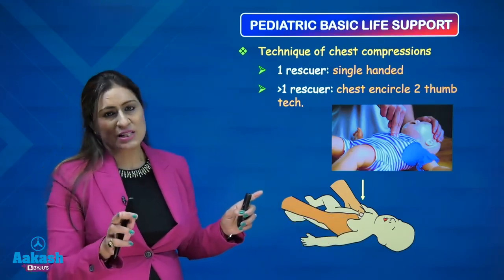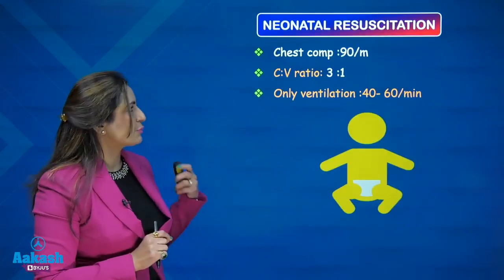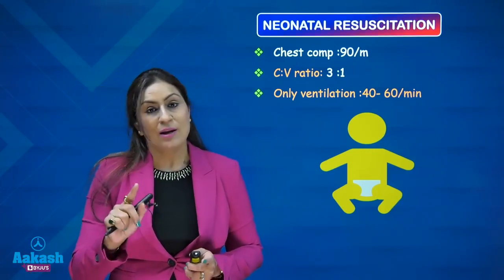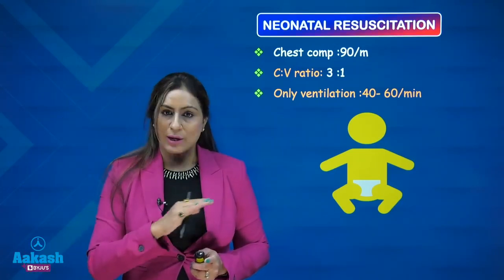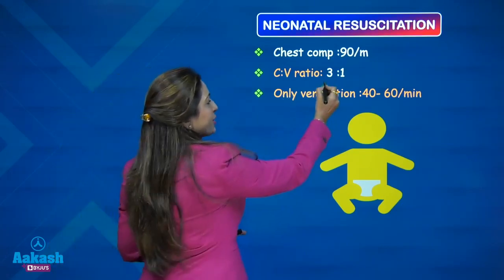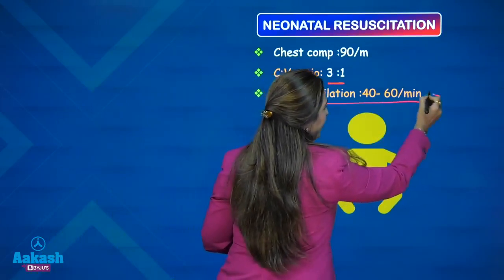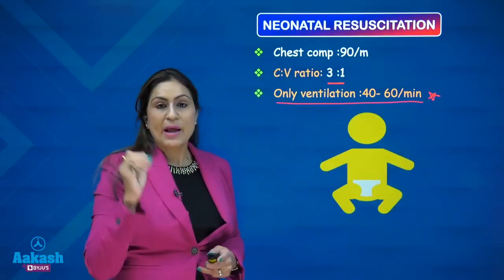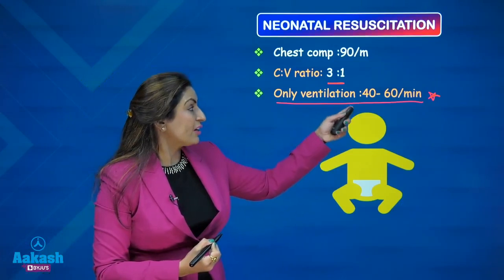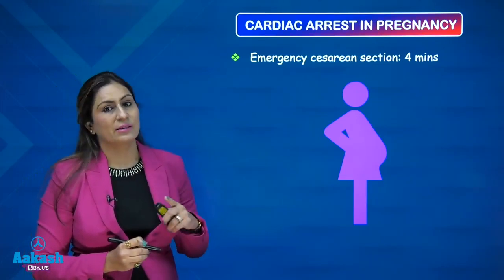A word about neonatal resuscitation — this is very important and has been tested in recent AIIMS exams. The chest compression rate is not 100 to 120 but approximately 90 per minute, and the compression-ventilation ratio is 3:1. Importantly, ventilation is the priority in neonates since it is primarily a respiratory event; ventilation rate should be 40 to 60 per minute.